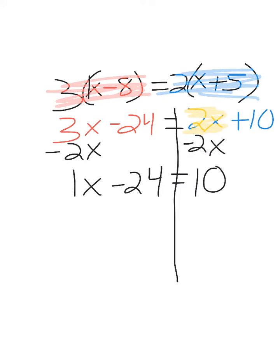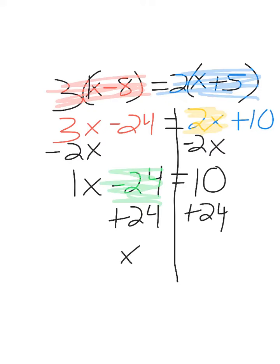Now I'm going to move the negative 24. Since this is negative, I will add 24 to each side. So I end up with x equals 34.